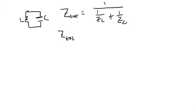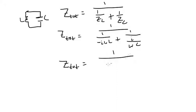So Z total is one over one over negative iωL plus one over iωC. And then our Z total is going to be equal to one over one over minus iωL plus ωC over i.